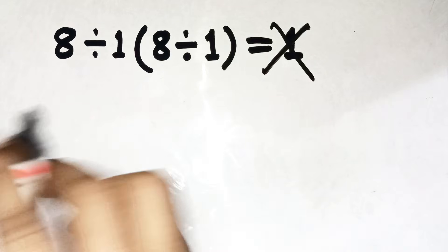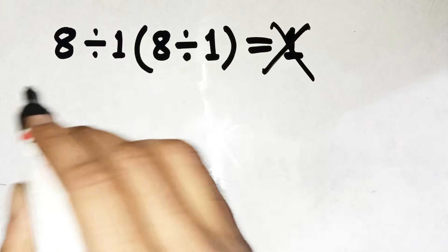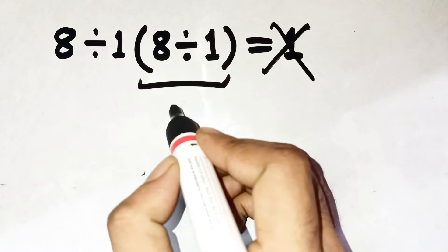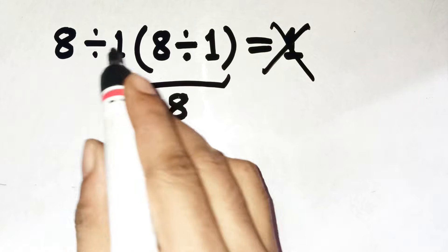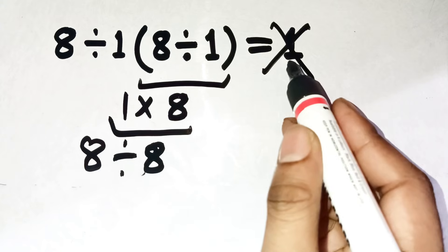The moment someone sees 8 divided by 1 times 8 divided by 1, their brain goes, oh, inside the bracket, 8 divided by 1 is 8, then multiply by 1, that gives 8, and finally 8 divided by 8 is 1.